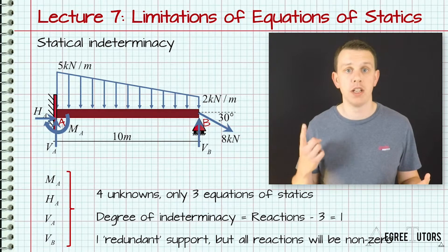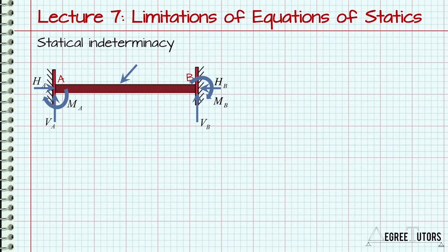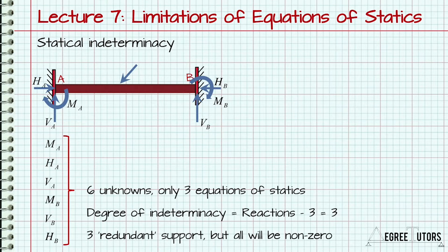A beam, for example, with two fixed supports at each end would have six unknown reactions and therefore be statically indeterminate to three degrees. The degree of indeterminacy is therefore the number of support reactions minus the number of equilibrium equations, which is three for two-dimensional structures.